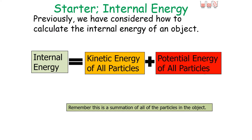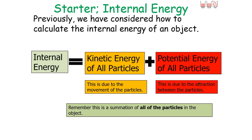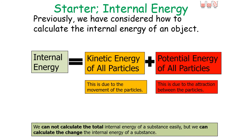Previously we've considered how to calculate the internal energy of an object. The internal energy is equal to the kinetic energy of all the particles plus the potential energy of all the particles — a summation of all the particles in the object. The kinetic energy store is due to the movement of the particles, and the potential energy store is due to the attraction between the particles. At GCSE we can't easily calculate the total internal energy, but we can calculate the change in internal energy.